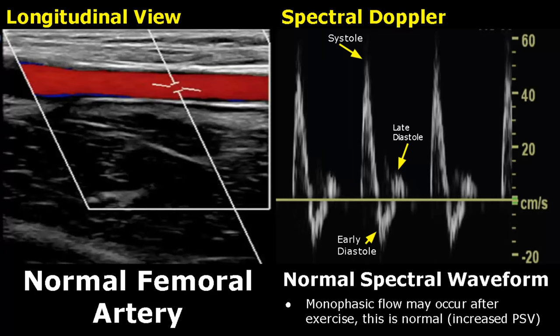Monophasic flow may occur after exercise, where the waveform will only show forward flow. This is normal. After resting, it will eventually return to the normal triphasic waveform.